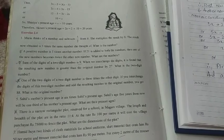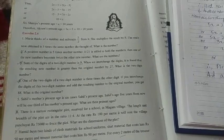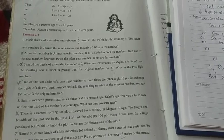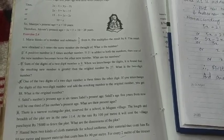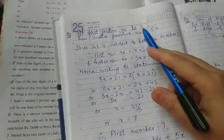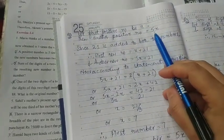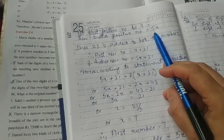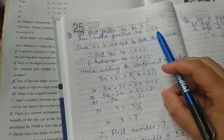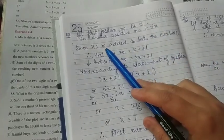This second question is: A positive number is five times the other number. If twenty one is added to both the numbers, then one of the new numbers becomes twice the other new number. So what are the numbers? Okay, so I am letting one positive number be x. Therefore other will be five x because it is said that the other number is five times the first. So if one number is x, the other is five x.